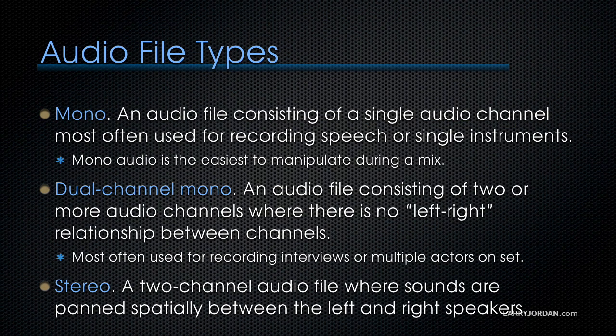The three most common audio file types are mono, dual-channel mono, and stereo. A mono file is an audio file consisting of a single audio channel, which is most often used for recording speech or single instruments. Mono audio is the easiest to manipulate during a mix. Dual-channel mono is an audio file consisting of two or more audio channels where there is no left-right relationship between the channels. This is most often used for recording interviews where the host is on one channel, the guest is on another, or multiple actors on set where the mic of each actor is assigned to its own channel in the recording.